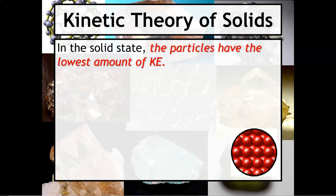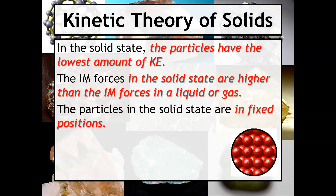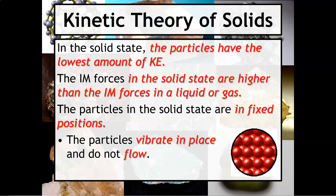In the solid state, the particles have the lowest amount of kinetic energy. The intermolecular forces in the solid state are higher than those in a liquid or gaseous state. The particles in a solid state are said to be in fixed positions, similar to what you see in the drawing on the right hand side. We often describe particle motion as if the particles are vibrating in place, and these particles do not have the ability to flow.